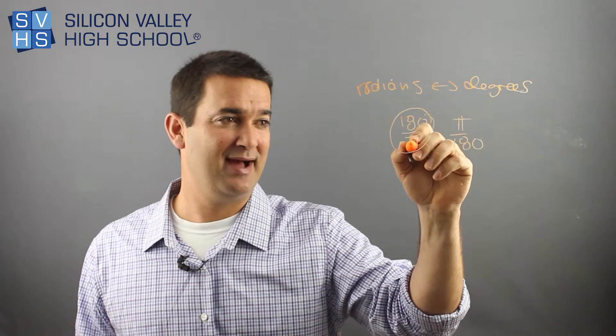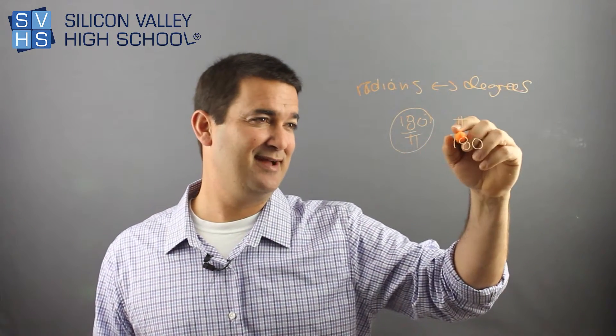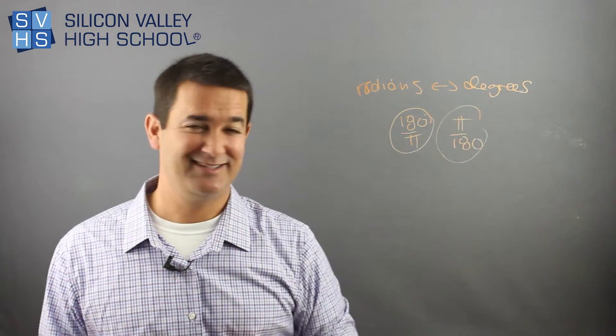If you're going from radians to degrees, you want degrees on top and your pi radians on the bottom. And if you're going from the other way, obviously, from degrees to radians, you use this one. You want to cancel your degrees and keep your radians.